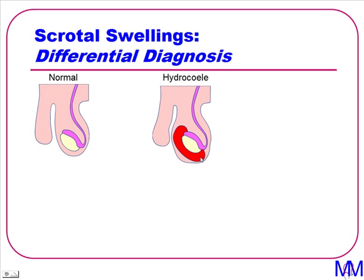On examination, it was probably fairly firm, because they accumulate quite a lot of fluid, and therefore often aren't fluctuant. However, the testicle is not separate to it, which is an important sign. You can get above it, and it transilluminates.